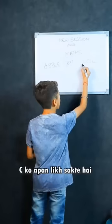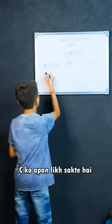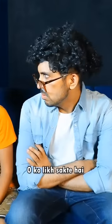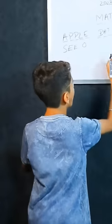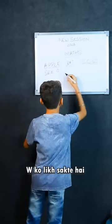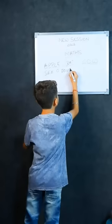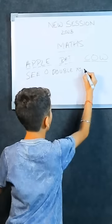C can write SEE. O can write O. W can write D. O, U, D, L, T, Y.